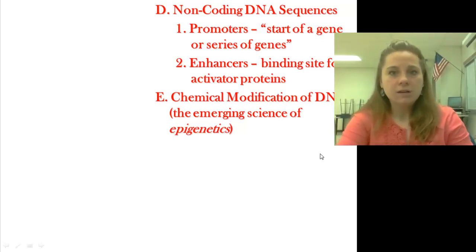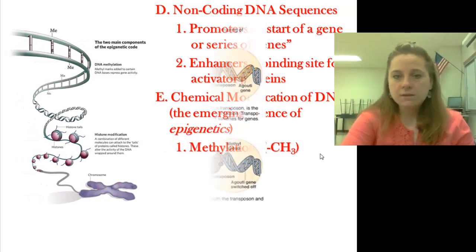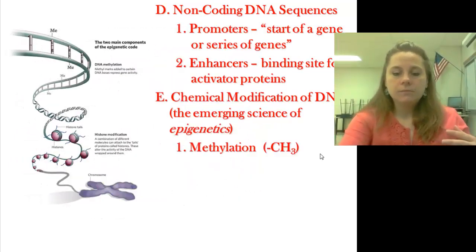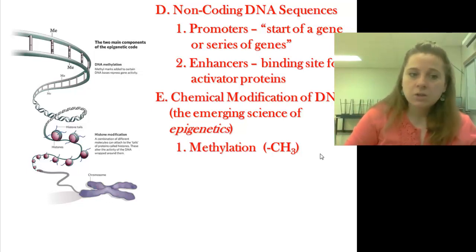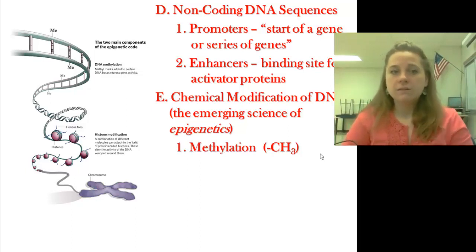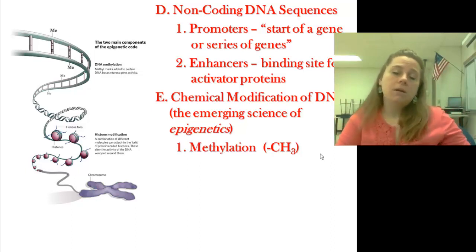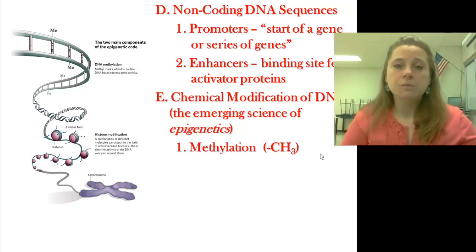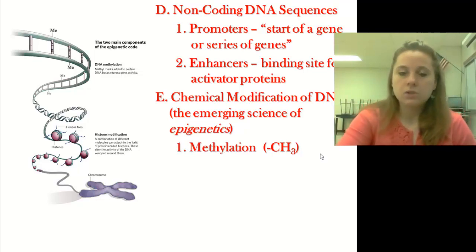In essence, epigenetics, where we have the methylation piece and areas for methyl groups to attach that can deactivate a gene. The methyl piece is where the methyl groups actually bind to the DNA and actually prevent it from being transcribed. The acetylation part of epigenetics is where acetyl groups will bind to the histones of the chromosome and prevent the gene from being expressed.